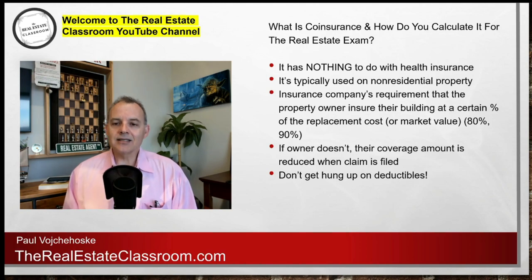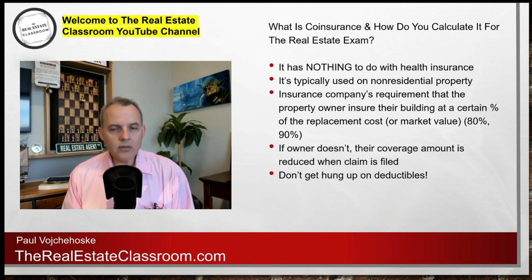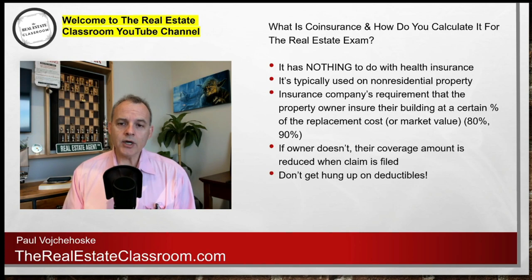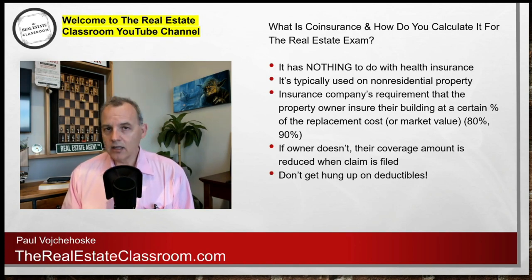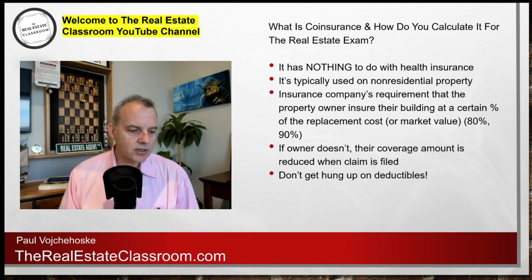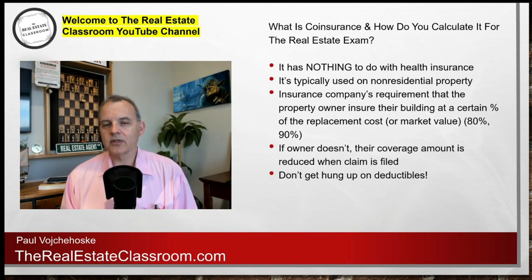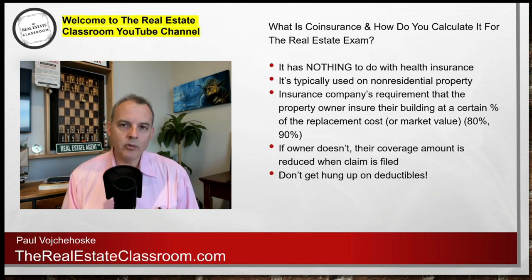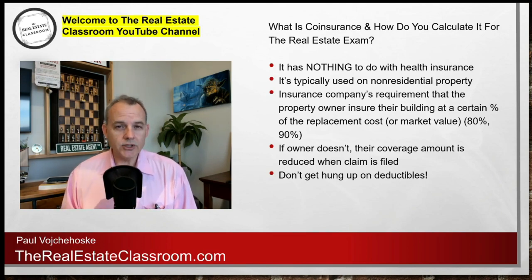If the owner doesn't maintain that coinsurance coverage as required by the policy, then what happens is if there is a casualty and you make a claim to your coinsurance carrier, you're going to get less — your check's going to be a lot less than it normally would be. And students often get hung up on deductibles, but with this type of insurance coverage we really don't see deductibles like you would in your normal homeowner's insurance or automobile policy. It's calculated differently.